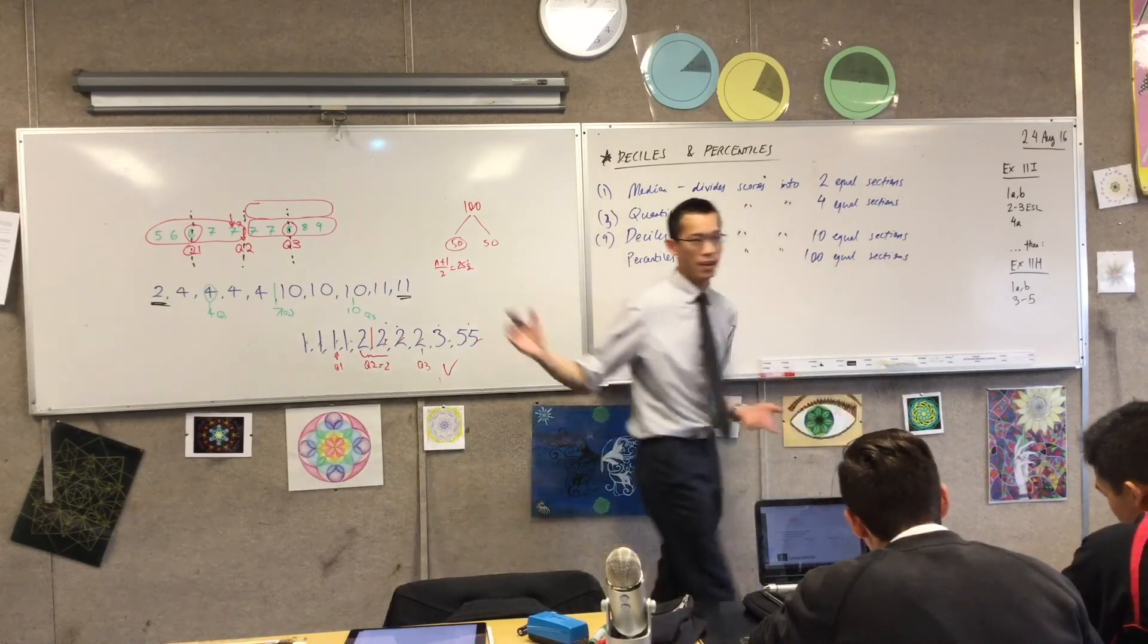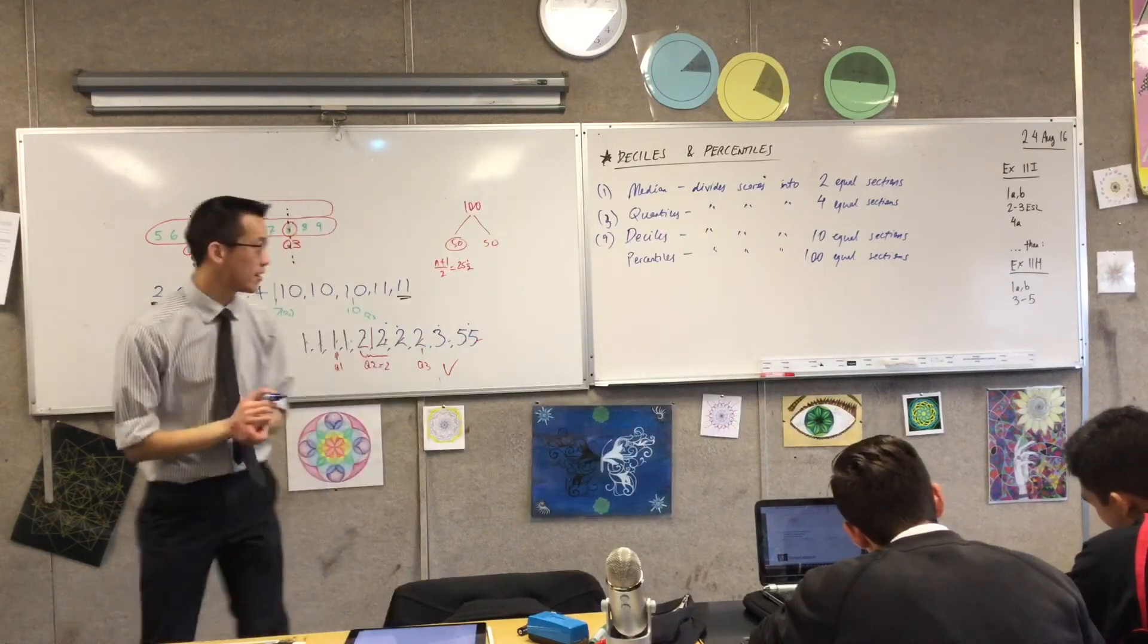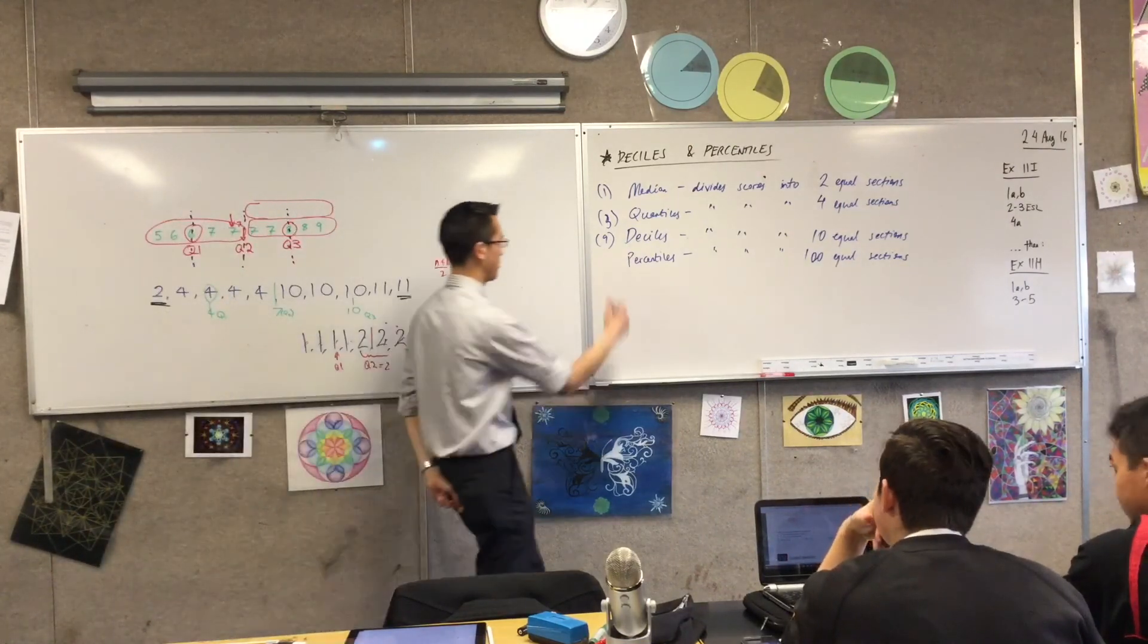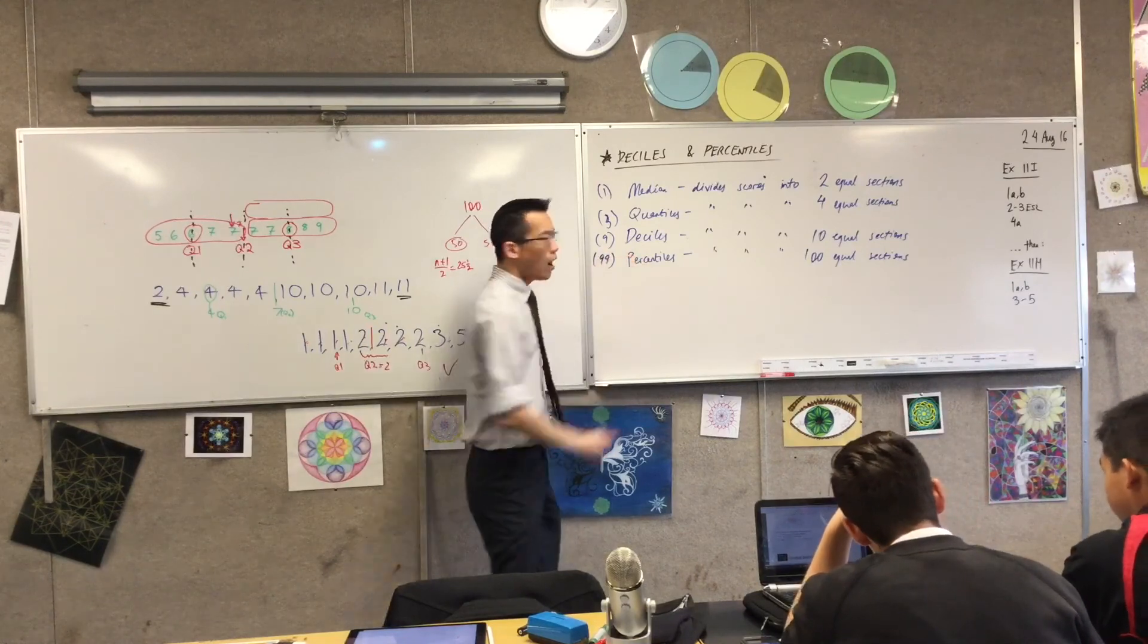Now follow with me. There's one median, three quartiles, nine deciles. How many percentiles are there? 99. There are 99.